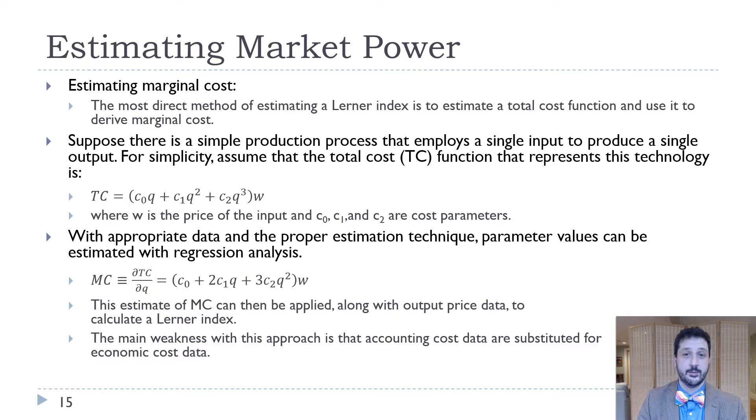This video is all about how we would actually estimate these numbers that we would like to have but that we don't have directly in financial statements of firms. One way we're going to do that is to use econometrics to estimate both a total cost function and a marginal cost function as well. We're going to have a total cost function where we have some cubic form: a Q, a Q squared, and a Q cubed, and then some input price. W is the price of the input, might be the wage of the workers. And then C0, C1, and C2 are cost parameters that we can estimate econometrically.